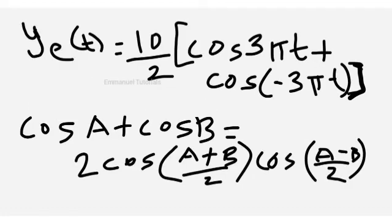That can also be written as (10/2)[cos(3πt) + cos(-3πt)]. Now we will use a trigonometric identity to simplify this expression. This is in the form of cos(a) + cos(b), and the identity is: cos(a) + cos(b) = 2cos((a+b)/2) · cos((a-b)/2).